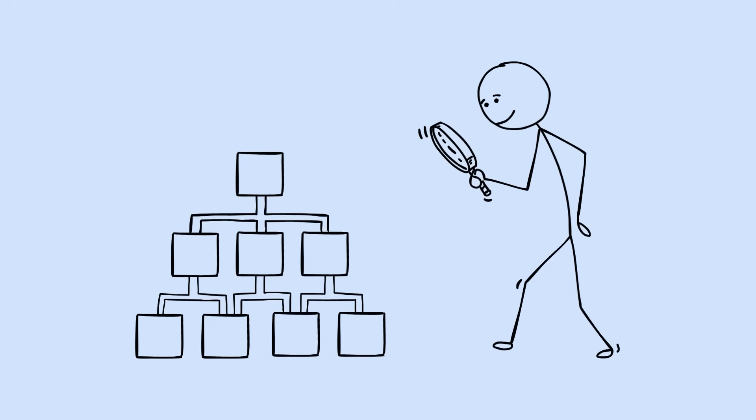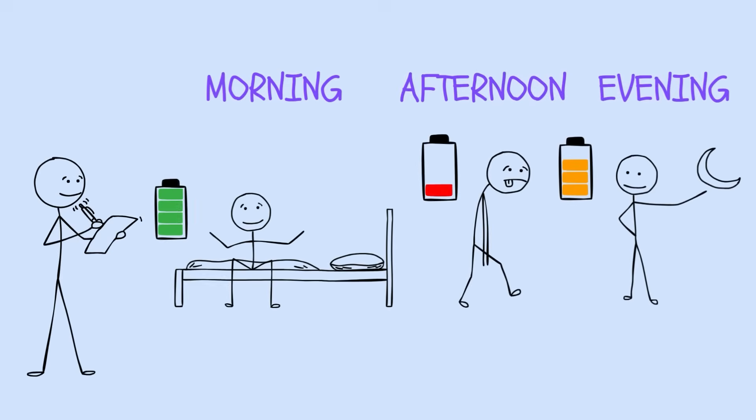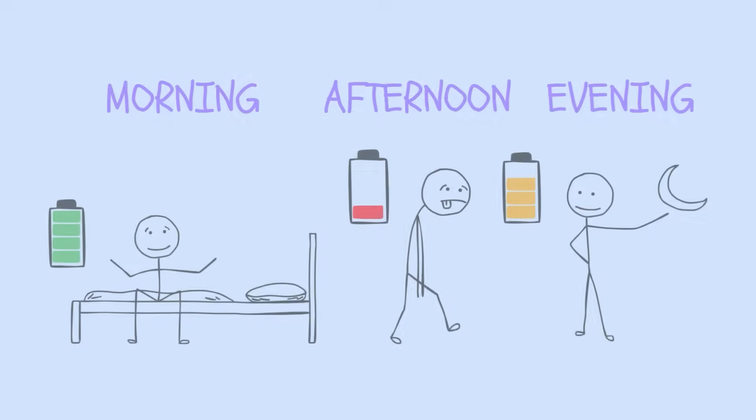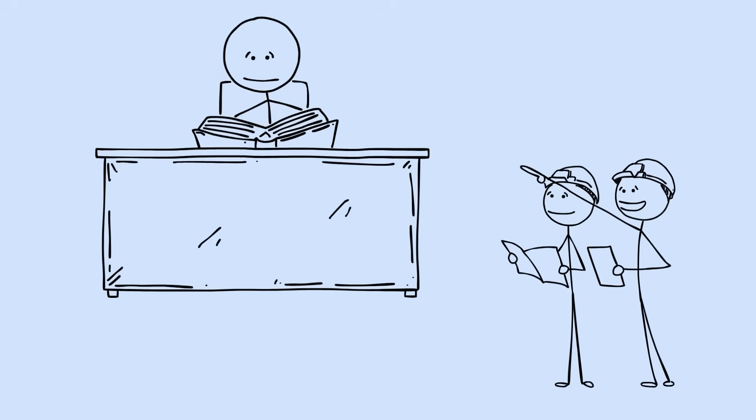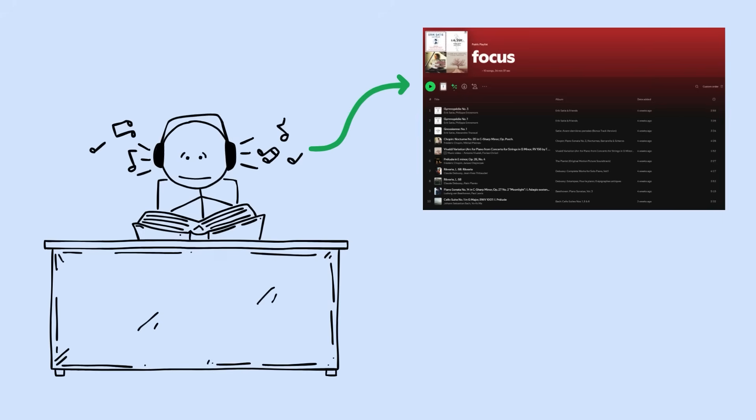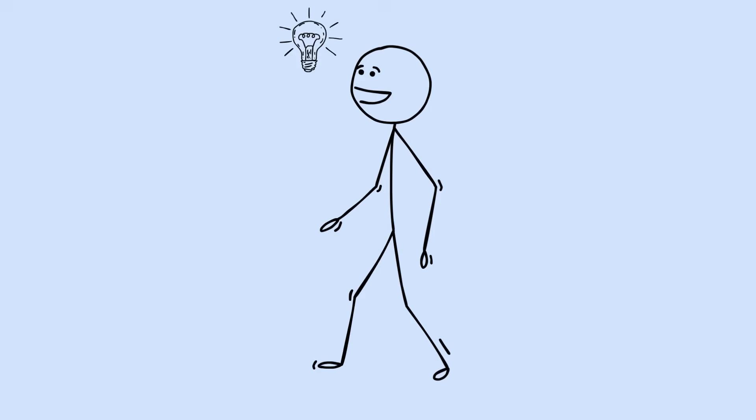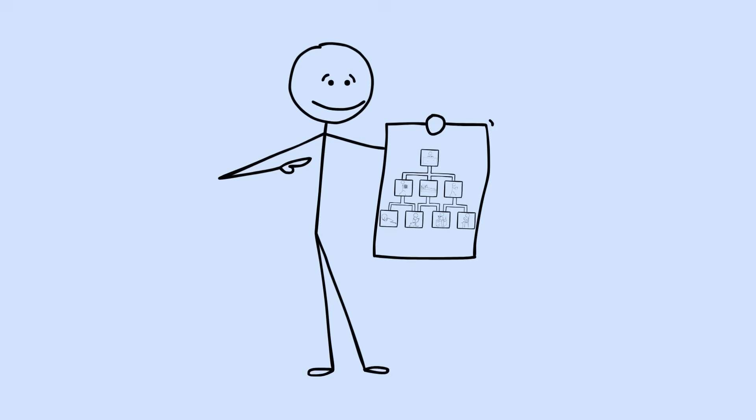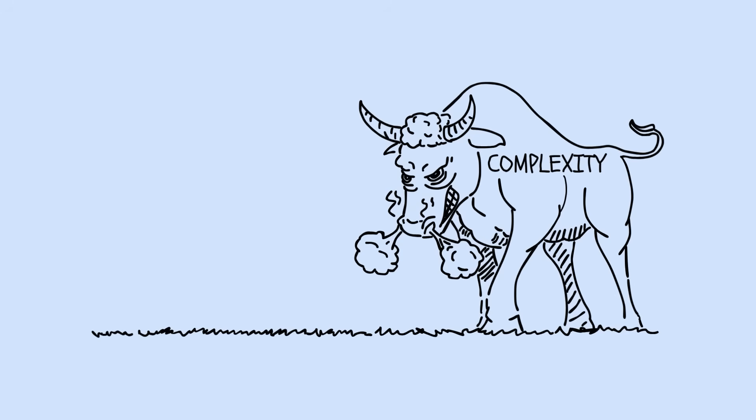Here's how to find your optimal system. Track your energy levels throughout the day for one week. Notice when you feel most alert, most creative, most able to focus. Your chronotype is your learning superpower. Design your environment around your discoveries. If you focus better with music, create specific playlists for different types of learning. If you think better while moving, find ways to study while walking. The best system is the one you'll actually use.